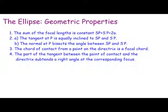Some geometric properties of ellipses: the sum of focal lengths is constant; the tangent is equally inclined to the normals; the chord of contact from a point on the directrix is a focal chord; and the part of the tangent between the point of contact and the directrix subtends a right angle at the corresponding focus. Many textbooks go through proofs of these properties.